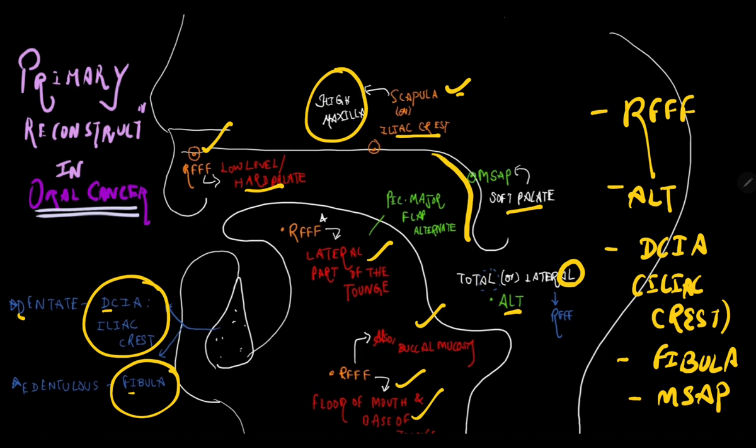To concise, lateral and total is ALT. For roof and floor, for hard palate and floor of mouth, buccal mucosa, lateral part of tongue, everything we're using RFFF. DCIA for dentate reconstruction of the mandible and as well the high maxilla reconstruction. MSAP for soft palate reconstruction. Alternate flap can be that is pectoralis major flap can be used in reconstruction of tongue after total glossectomy also. Thank you so much for your patient listening. Hope helped you to easily remember some facts.